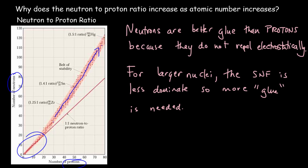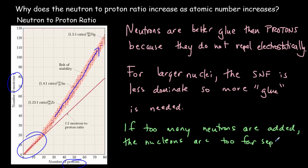Now, we can't just add neutrons indefinitely and get bigger and bigger nuclei because, of course, the nucleons are getting farther and farther apart. So the strong nuclear force becomes less and less dominant. So increasing the ratio of neutrons to protons helps to an extent. But this isn't going to continue indefinitely. If too many neutrons are added, the nucleons are too far separated on the average. And the strong nuclear force cannot dominate. So the nucleus won't remain stable.